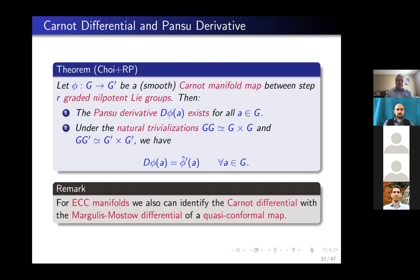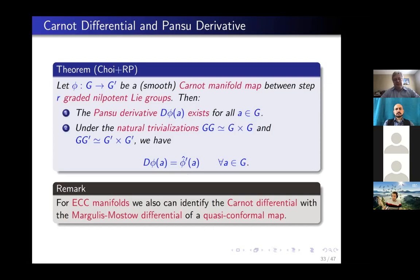For ECC manifolds (equiregular Carnot-Carathéodory manifolds), you can also identify the Carnot differential with the Margulis-Mostow differential of quasi-conformal maps. We didn't write all details in the paper, but I believe this is true — you have to make an identification between the way Margulis-Mostow defines the tangent group and the way we define it.